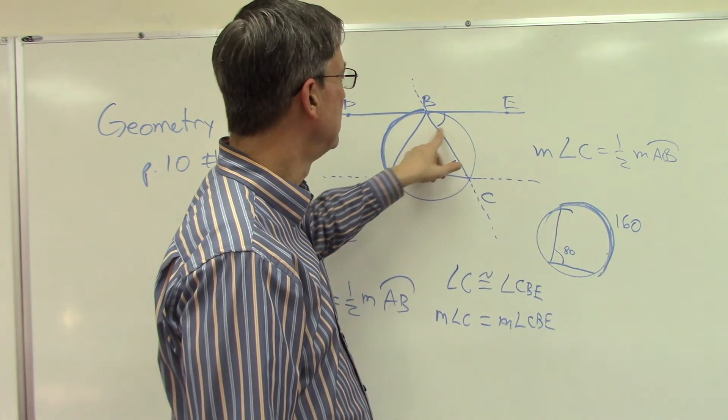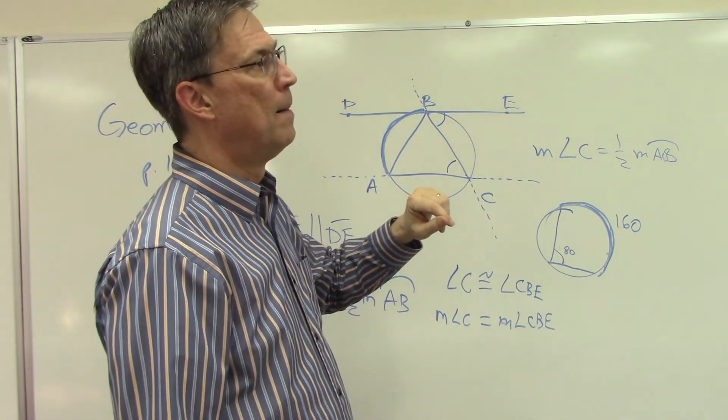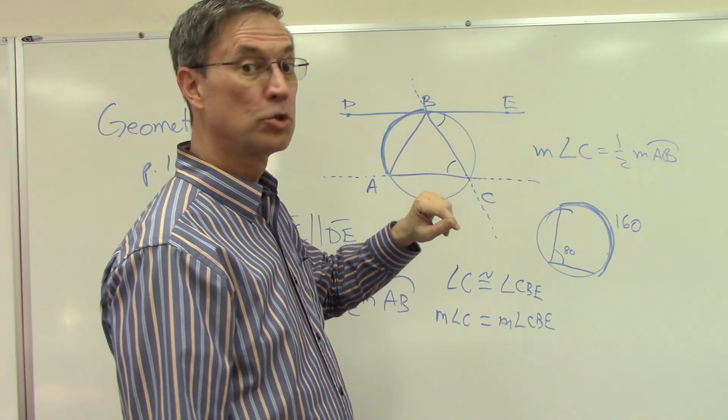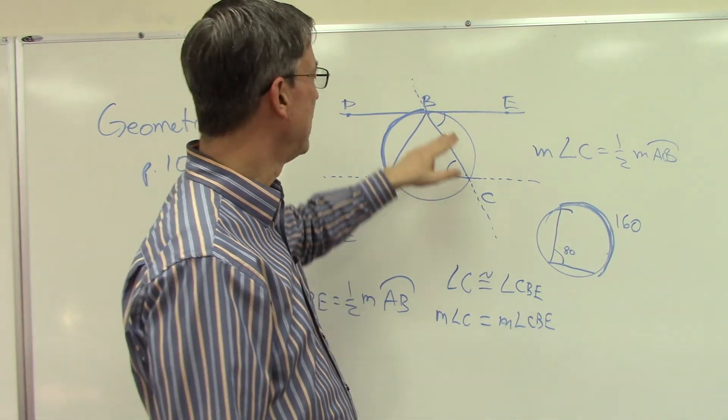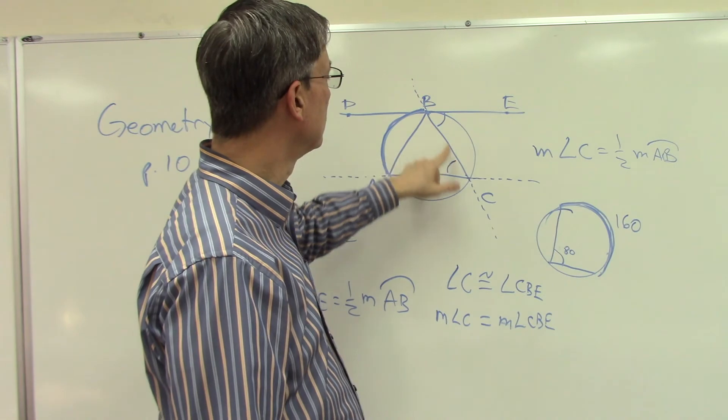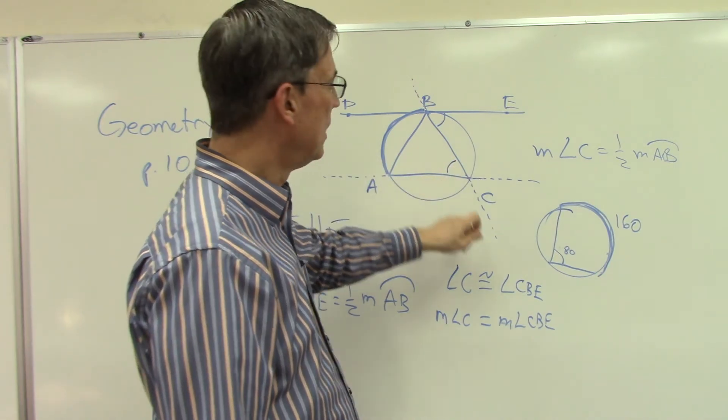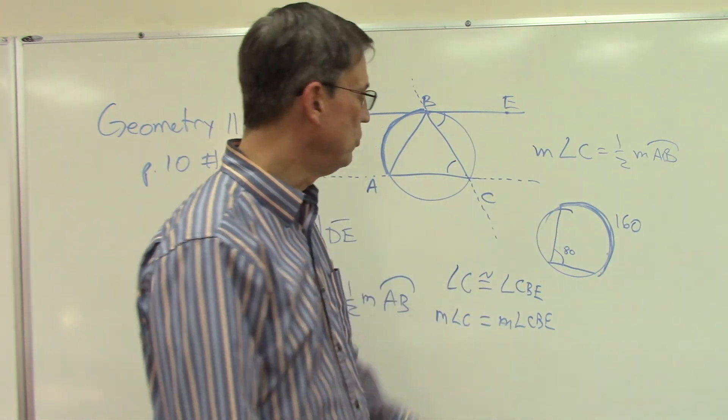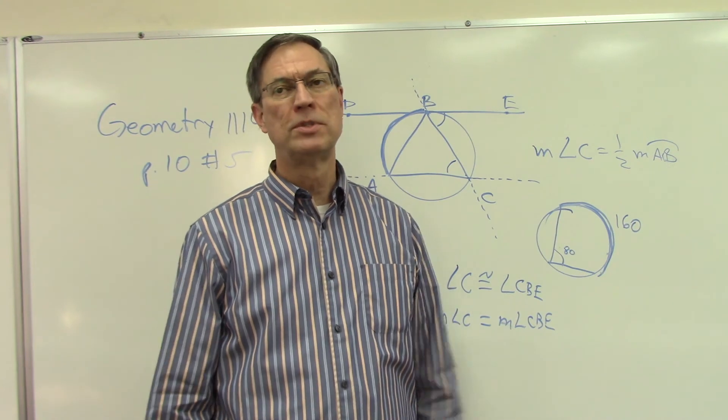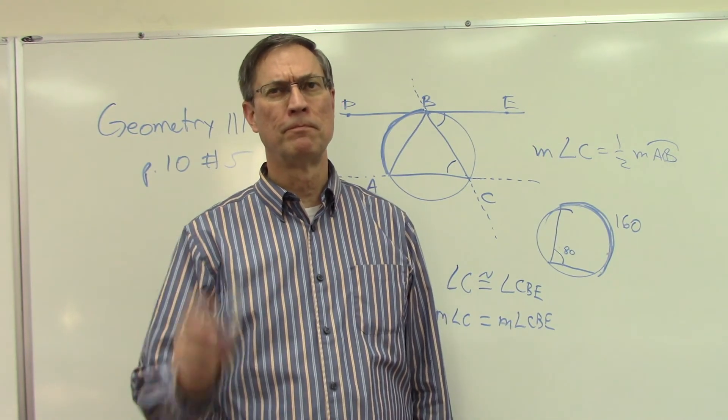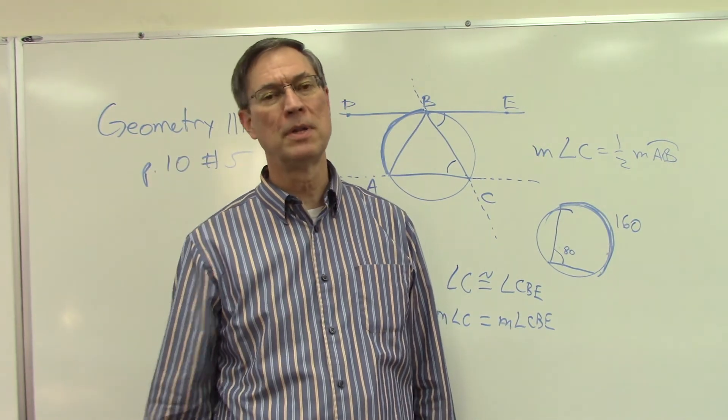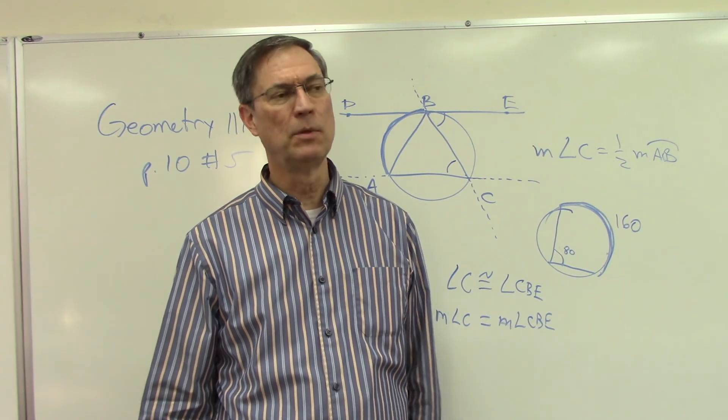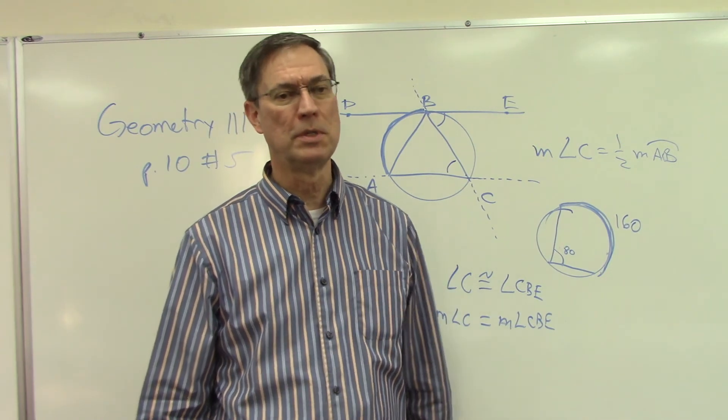This angle out here is not inscribed, and so it's not opening up to the arc, but it is congruent to the angle that is. So now I can do substitution, you could set it up and do a transitive property if you set it up like a Z. That's either way. Substitution to me is always easier, okay?